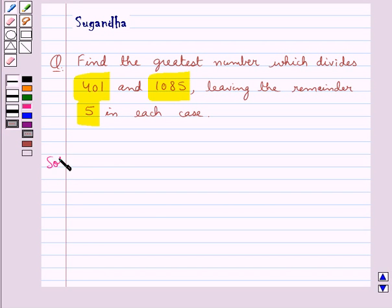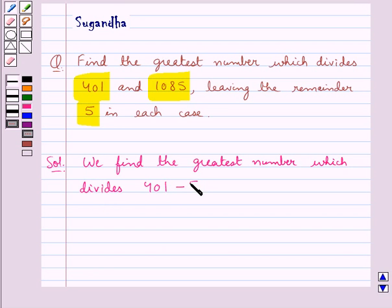Now let's see the solution. We have to find the greatest number which divides 401 and leaves the remainder 5, and also divides 1085 leaving the remainder 5. So we find the greatest number which divides 401 minus the remainder, that is 5, and 1085 minus the remainder which is 5.